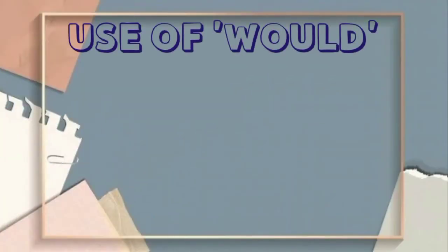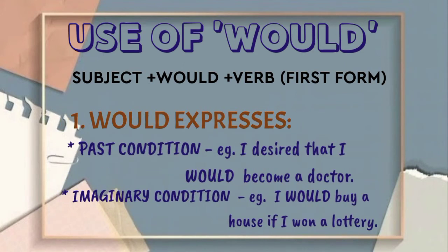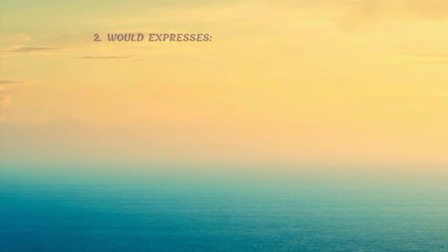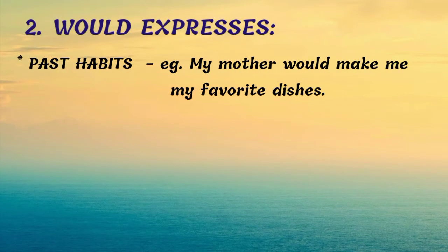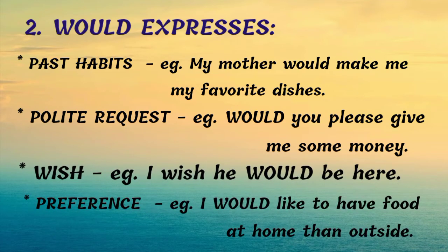Use of Would: In a sentence, first write the subject, then would, then the first form of verb. Would expresses past condition — for example: I desire that I would become a doctor. Imaginary condition — I would buy a house if I won a lottery. Would also expresses past habits. For example: my mother would make me my favorite dishes.